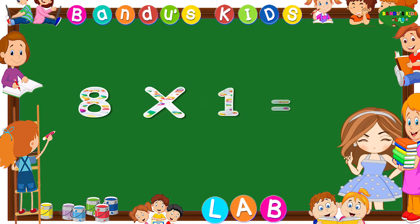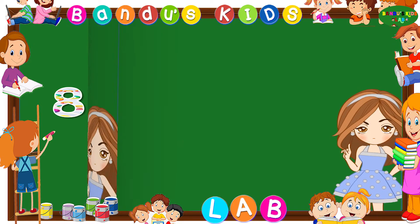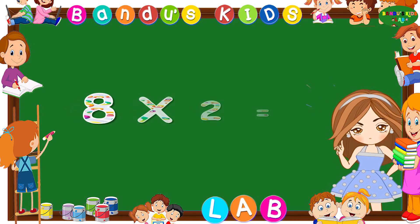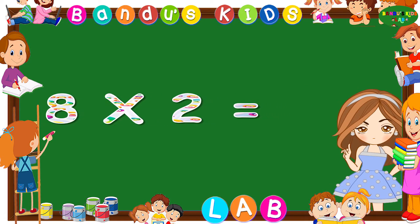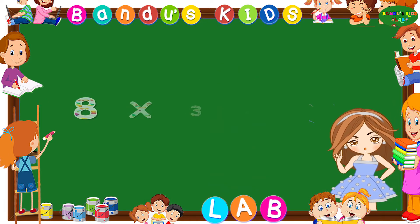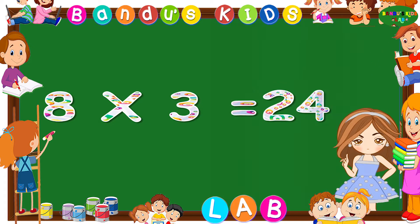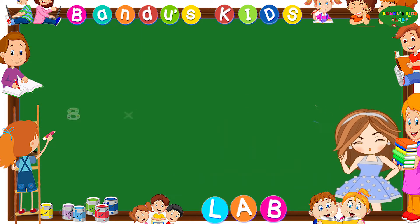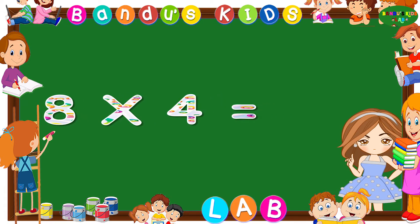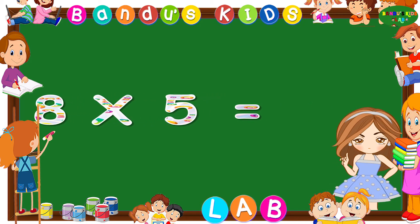Eight ones are eight. Eight twos are 16. Eight threes are 24. Eight fours are 32. Eight fives are 40.